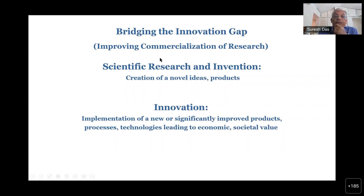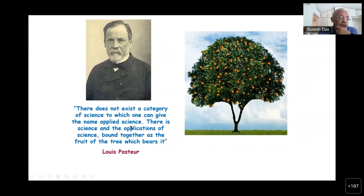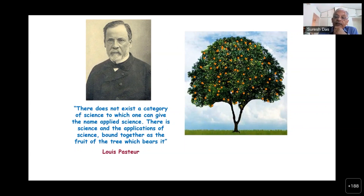This crossover does not happen automatically — certain steps need to be taken to improve commercialization and societal value. Innovation is often called applied research, and the other is called scientific research. But Louis Pasteur said: there does not exist a category of science to which we can give the name applied science. There is science and the applications of science, bound together as the fruit of the tree which bears it. Basically, if you nurture the tree of science, then automatically the fruits — the innovations and products that get into society — will come.